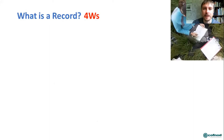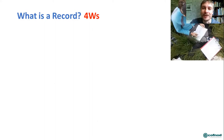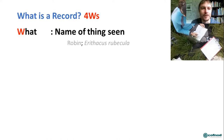So what is a record? That's an interesting question. When I first started working at COFNOD, I'd tell my friends I had a new job at a record centre — they thought I was selling vinyl records. People are a bit more familiar with what a record centre is now. When we distil it down, a record has four W's — that's a good way of remembering it. What, where, when, and who. So starting with 'what': it's the name of the thing you've seen — either a common name like robin, or the scientific name.